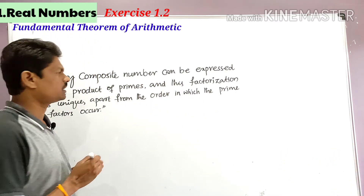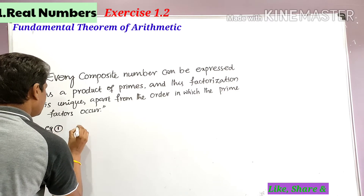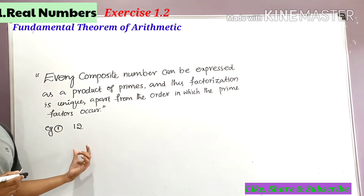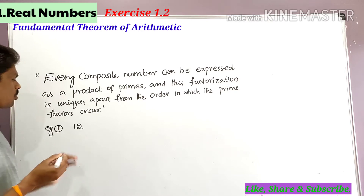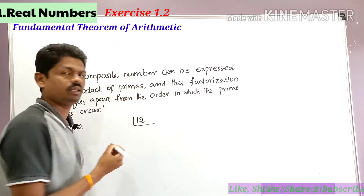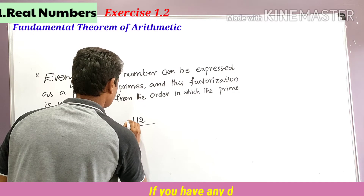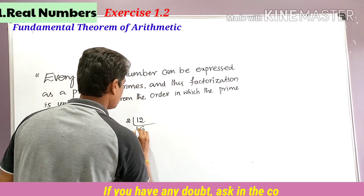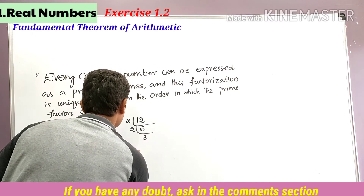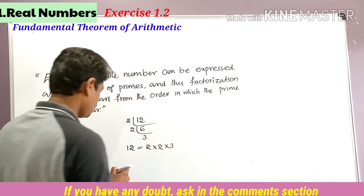Let's take an example. Take 12, which is a composite number. By prime factorization, starting from the least prime 2: 2 divides 12 to give 6, and 2 divides 6 to give 3. So the prime factors of 12 are 2, 2, and 3. Therefore 12 = 2 × 2 × 3.